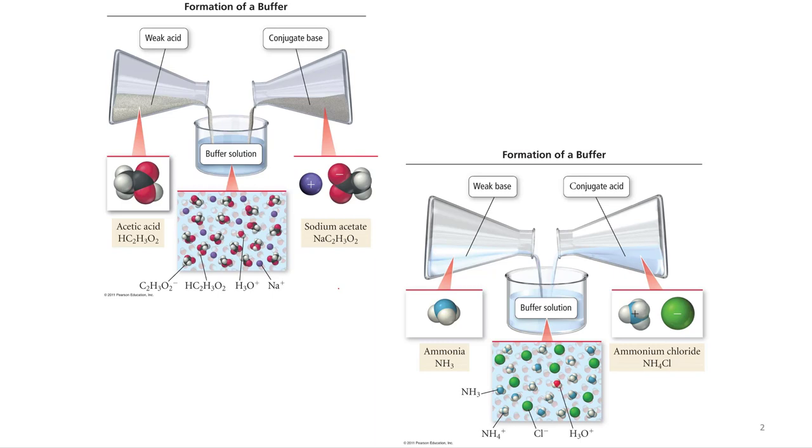Or you could make a buffer with ammonia, that's a weak base, and its conjugate acid, ammonium NH4+. And of course, when you grab some ammonium, it's an ionic compound, it's got to have an anion with it, so ammonium chloride.